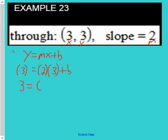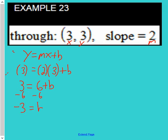3 equals 6 plus b. Subtract 6 from both sides: negative 3 equals b.